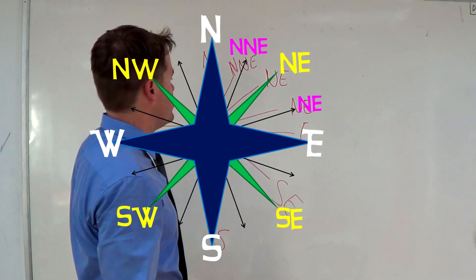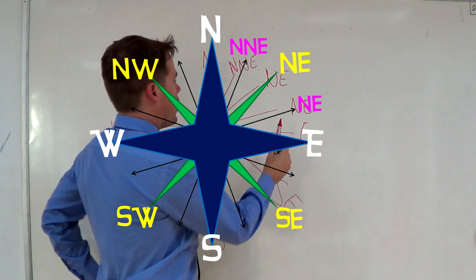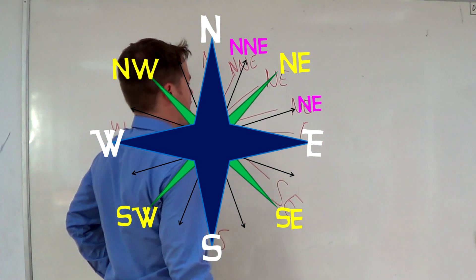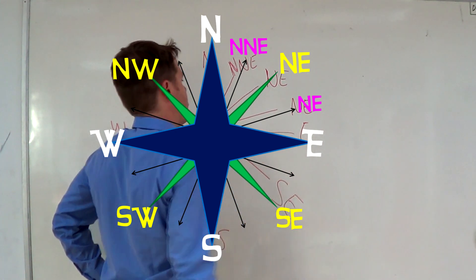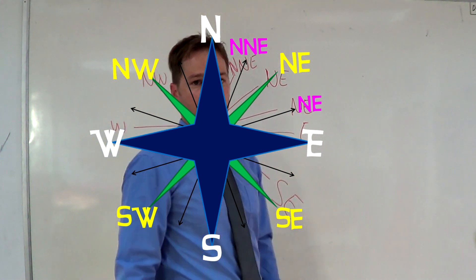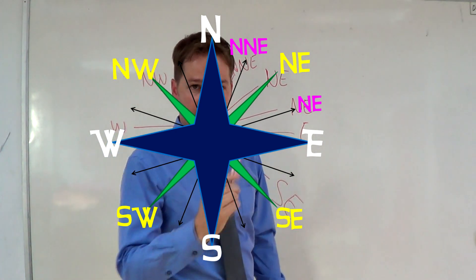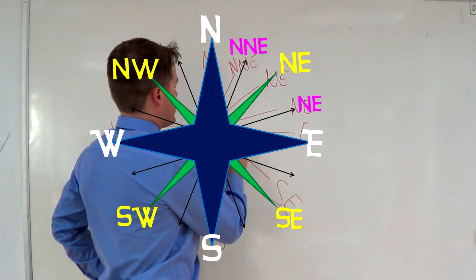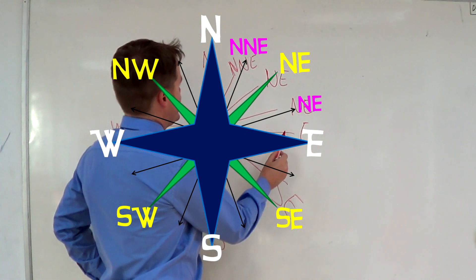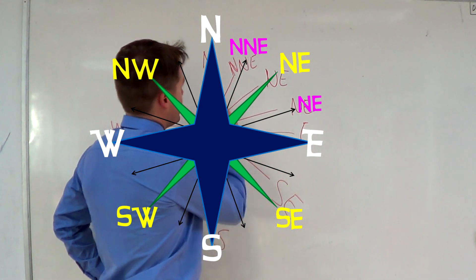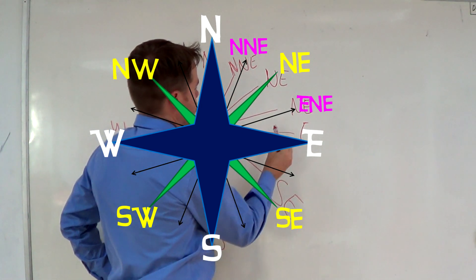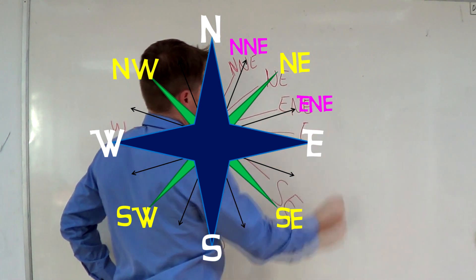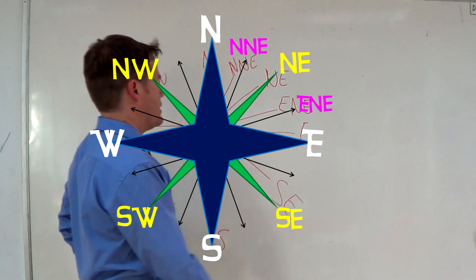Now we need to know the direction over here, and the same principle applies. Which direction are we closer to — east or north? It's closer to east, and that is why we put an 'e' in front, giving us east-north-east.